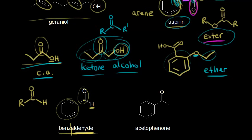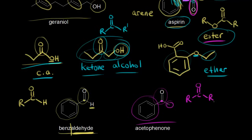If we take off that hydrogen and put a CH₃ instead, we get the compound on the right. Now we have a CH₃ directly bonded to the carbonyl carbon: R-C(=O)-R. That is a ketone. An aldehyde has a hydrogen directly bonded to the carbonyl carbon; if there's no hydrogen, we're talking about a ketone.